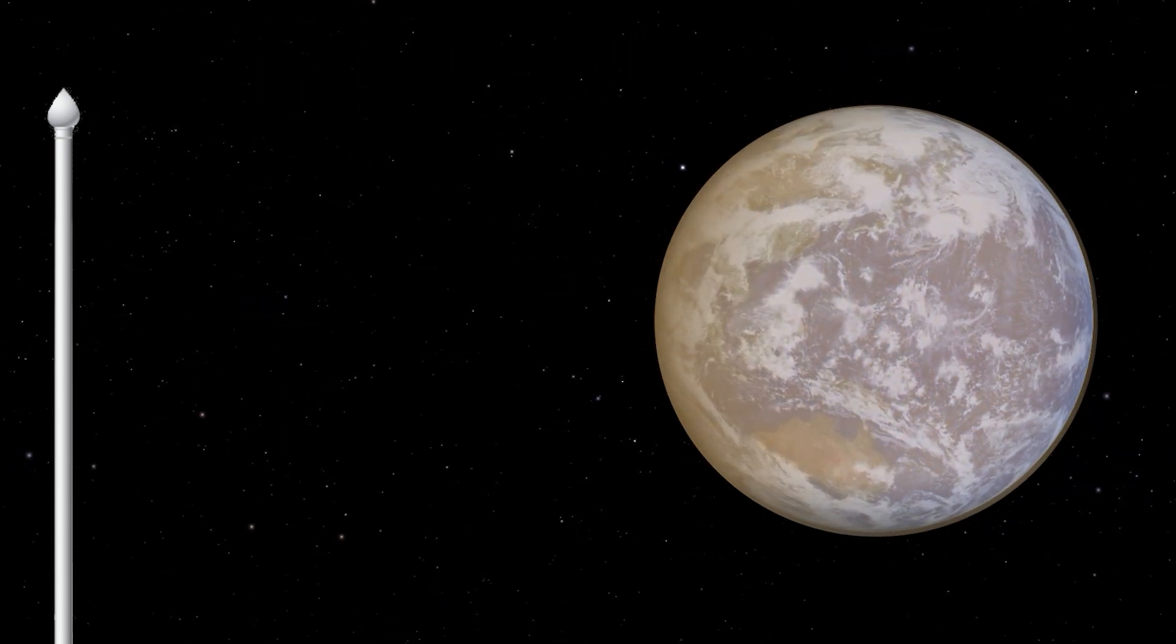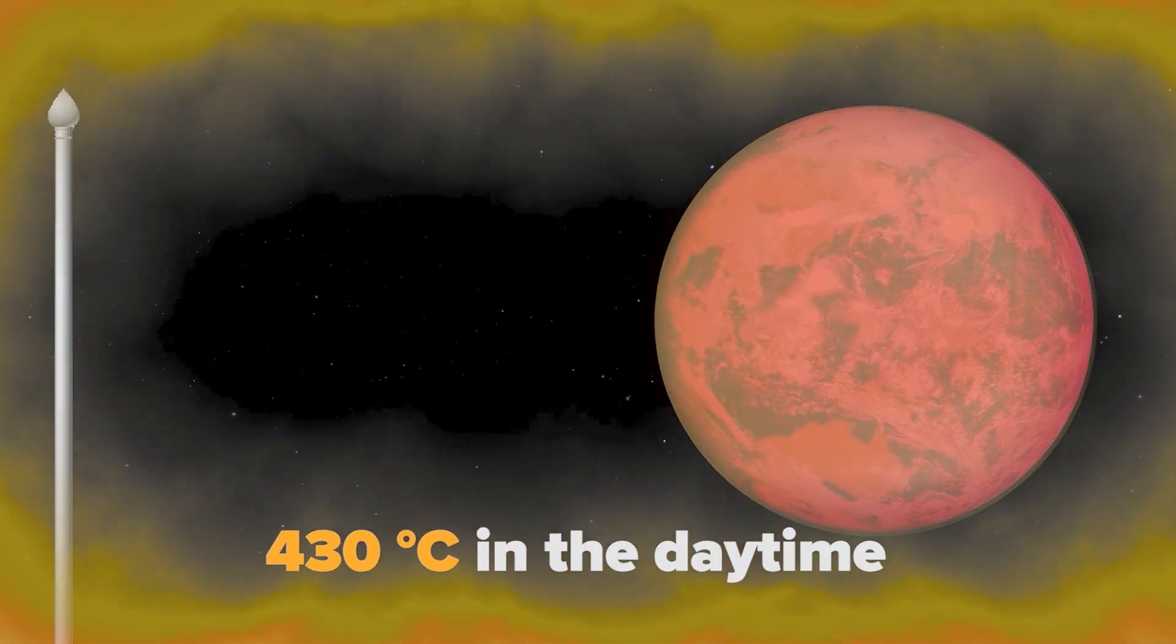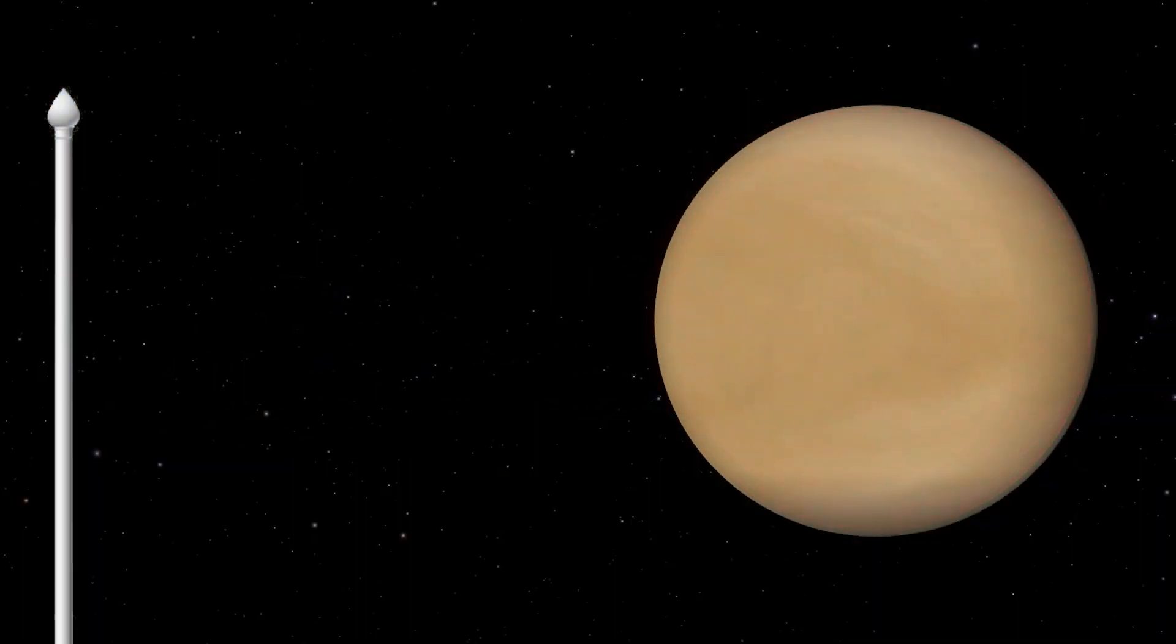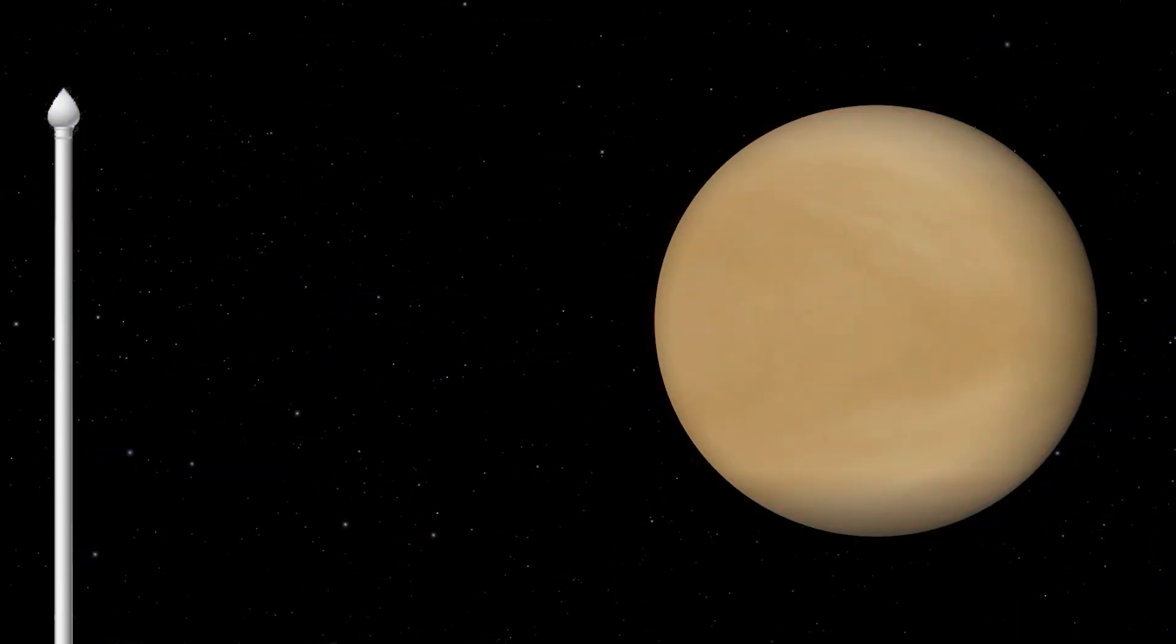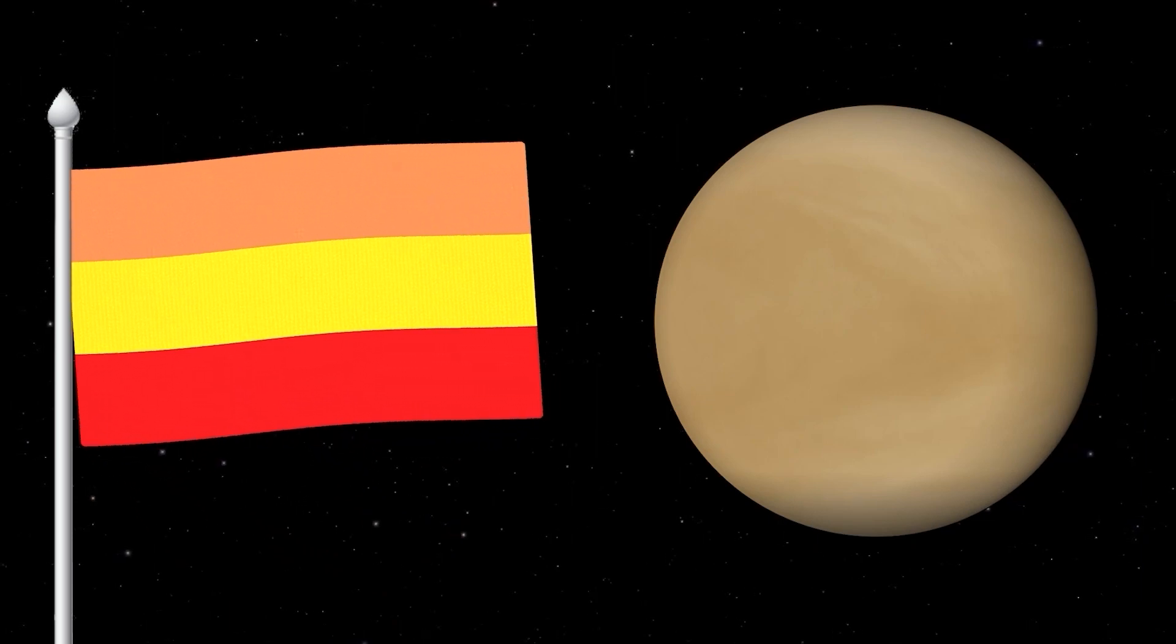Since the temperatures on Venus can reach 430 degrees in the daytime, making it the hottest planet in the solar system, the flag will be a tricolor of orange, yellow and red.